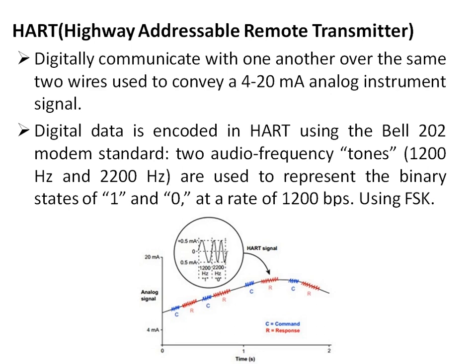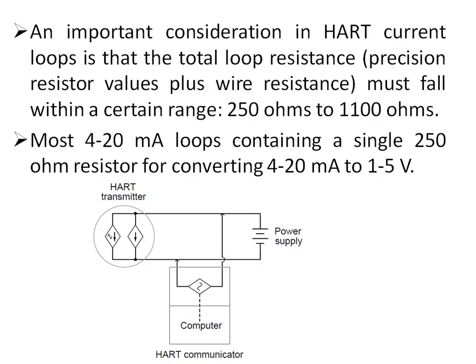The HART signal is an AC signal with a peak-to-peak current of 1 milliampere. Since it is an AC signal, its average value is zero, so this AC superimposed on the same 4 to 20 milliampere loop does not affect the 4 to 20 milliampere DC signal.